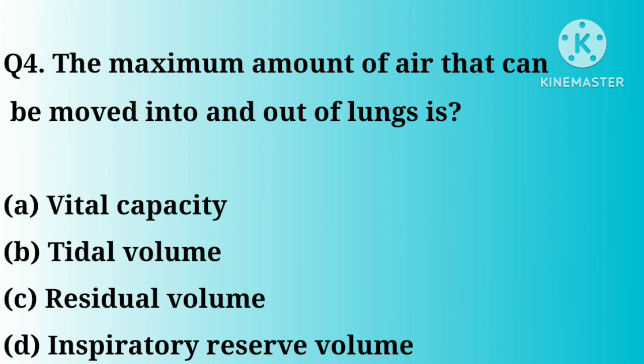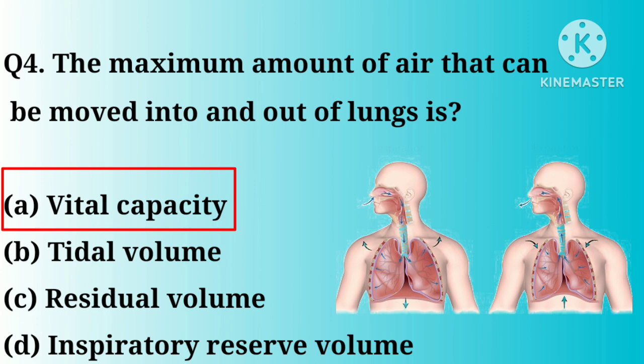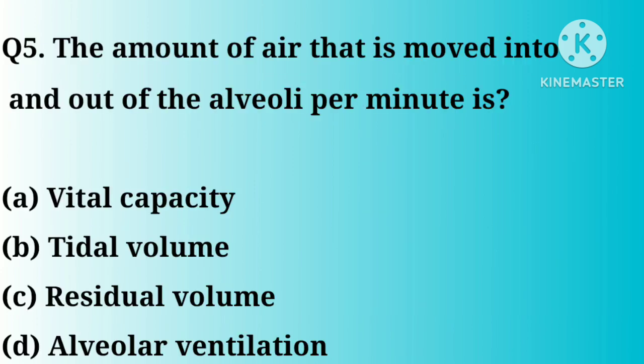Question number 4. The maximum amount of air that can be moved into and out of the lungs is: Option A. Vital capacity. B. Tidal volume. C. Residual volume. D. Reserve volume. Correct answer: Option A.